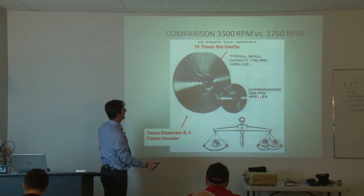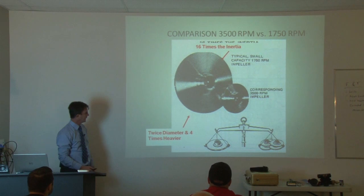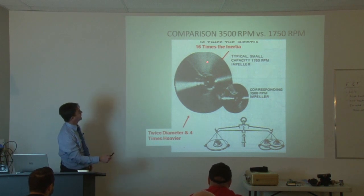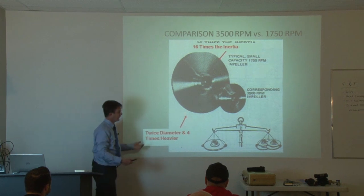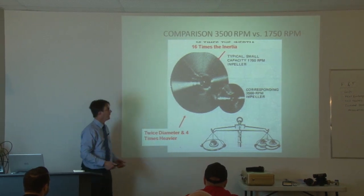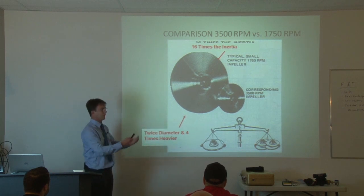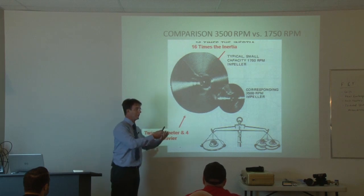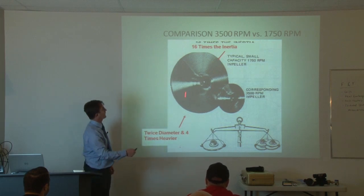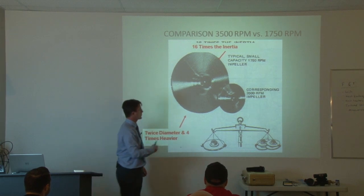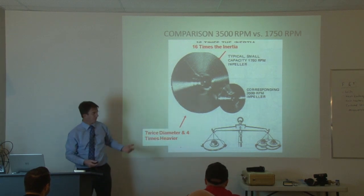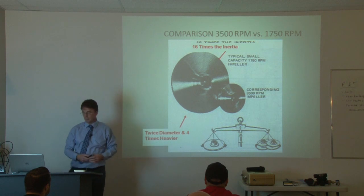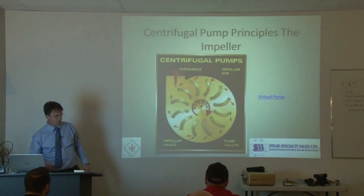Shipco only uses 3,500 RPM impellers. A 1,750 RPM impeller is twice the diameter and four times heavier, so it takes more power to run it. Because condensate pumps are on and off, there's a lot of surge power needed to get the pump rolling. With a 1,750 RPM impeller, there's that much more power required to start it, and because they're bigger, they're also much more expensive to replace.